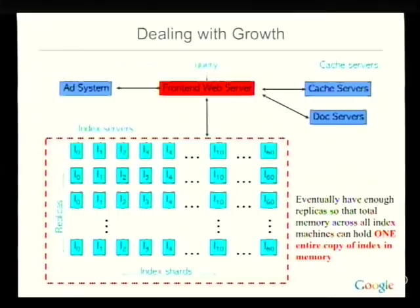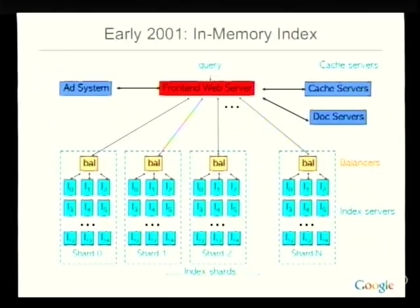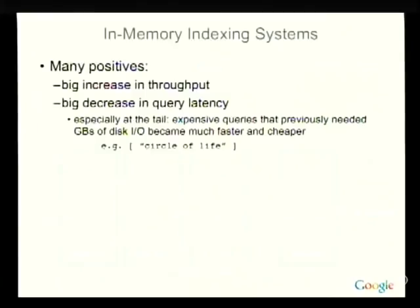This was basically the design we came up with. There's another layer of distribution called balancers — the front-end web server talks to each balancer in a shard, and the balancer talks to each machine in the shard, since there's now only one replica of any given piece of index data. The balancer combines results and sends them back up to the web server. There are a lot of really good things about this: you get a really big increase in throughput because you're no longer doing disk seeks, just reading from in-memory data structures. You also get a very big decrease in query latency, especially at the tail.